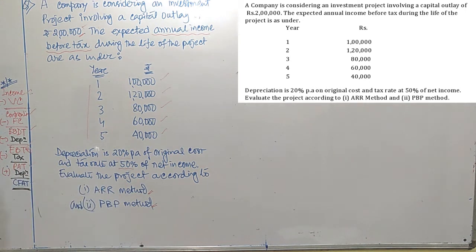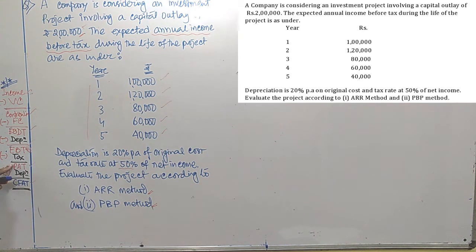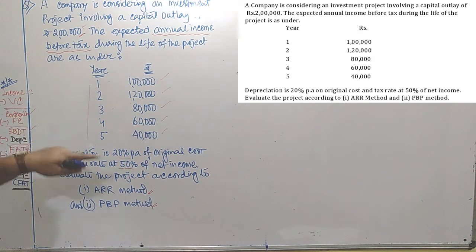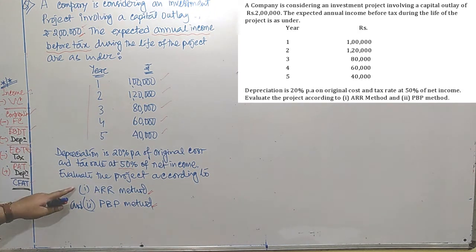These two methods ask us to calculate. To get ARR, we need to focus on PAT, because the formula of ARR is average PAT divided by average investment into 100. We have to calculate PAT of each and every year, and once we get the PAT of each year it becomes easier to calculate average PAT. Once we get average PAT, we can easily find ARR.